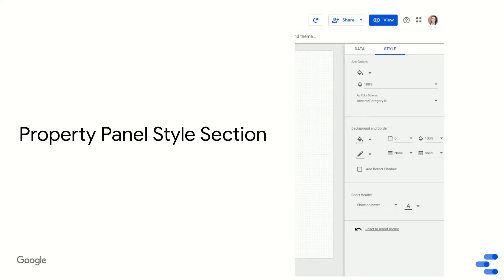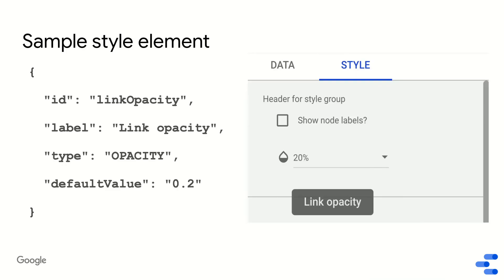The next thing we'll talk about is the style section, where you can change the styling of a visualization. To pick what renders in the style section for your community visualization, you define different style elements. A style element has an ID, which defines how your visualization code accesses this data; a label, which renders as a tooltip; a type, which defines the type of style selector rendered — for example, an opacity selector, a checkbox, or different color selectors, all found in our documentation. You can also define a default value for before the user has selected anything.